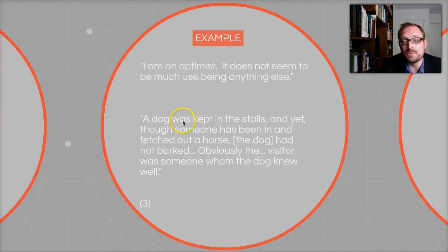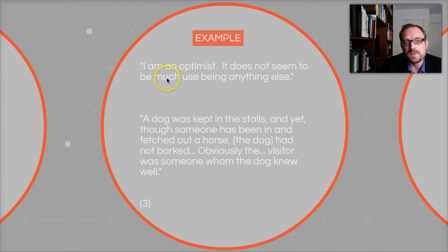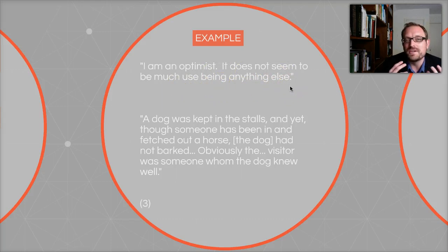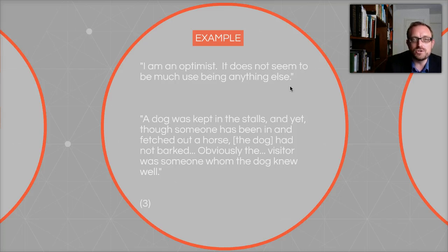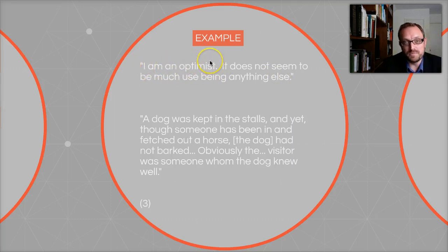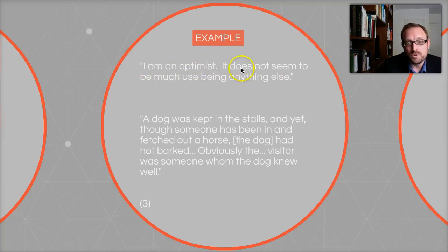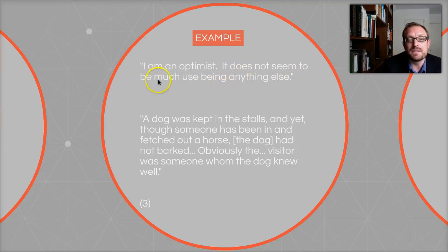Here are two examples from the textbook. The first comes from Winston Churchill: "I am an optimist. It does not seem to be much use being anything else." That's one of his quintessential quotes — pithy, funny, but also true. The conclusion here is "I am an optimist" — this is what he wants you to believe about himself. And his reason — the premise — is that there's not much usefulness in doing anything else, that is, in not being an optimist.